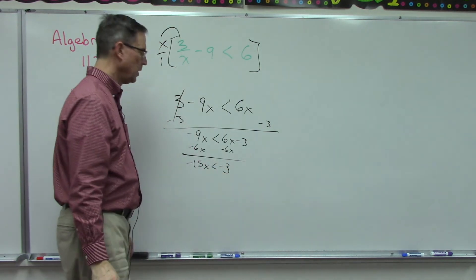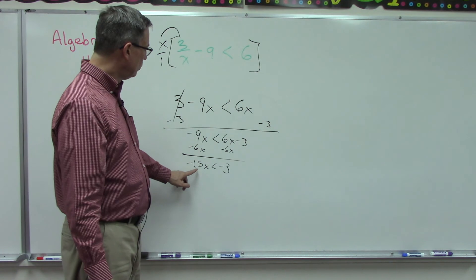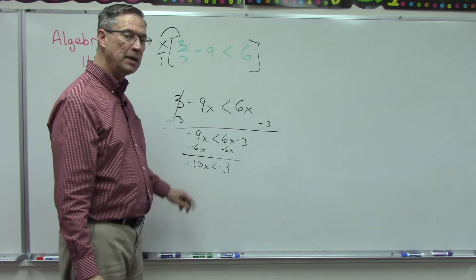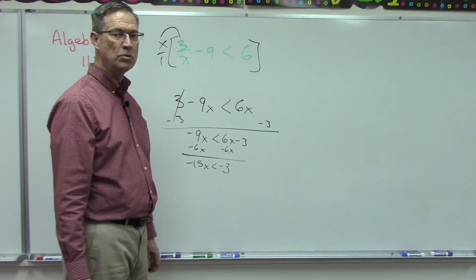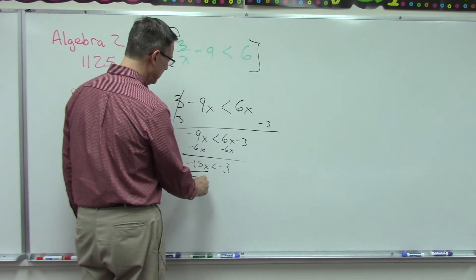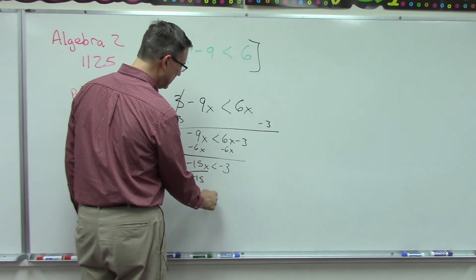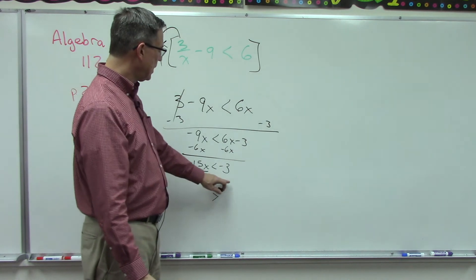Hey, we're almost done. We're solving for X. Do you remember what the rule is though when we divide by a negative with inequalities? We just have to memorize this and use this rule: when you divide by a negative, that's going to, in the next step, switch the direction of the inequality. Okay, so we'll divide both sides by the same thing.